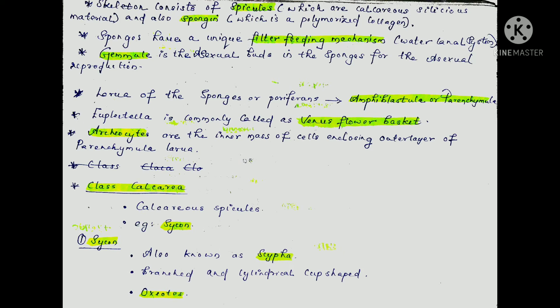There are two larval forms: Amphiblastula and Parenchymula. Next is Uplecta. The common name of Uplecta is Venus Flower Basket — it has glass sponges with a very beautiful body structure. The Venus Flower Basket is traditionally given as a wedding gift because of its beautiful structure, also called Archaeocytes.